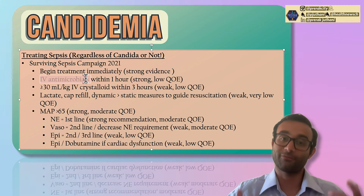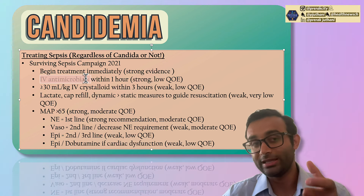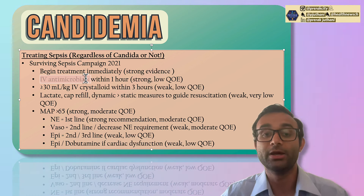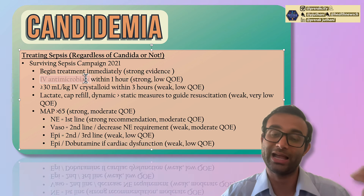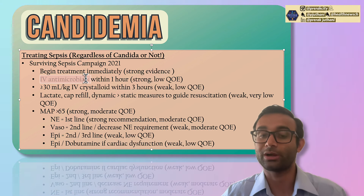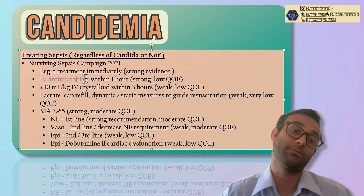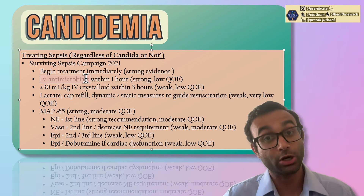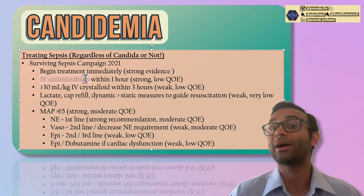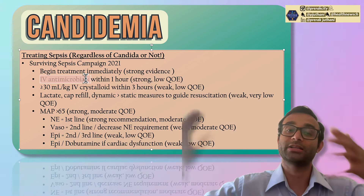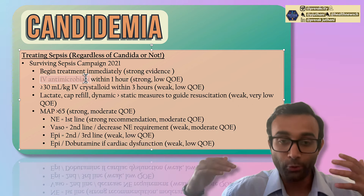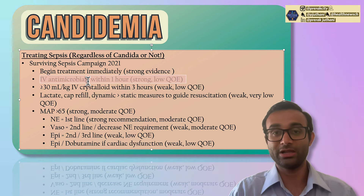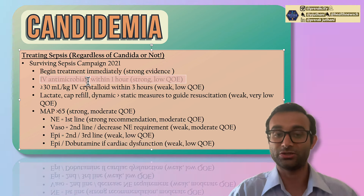For example, if a patient aspirated and you think they have aspiration pneumonia seeding their blood, start IV antibacterials covering aspiration pneumonia organisms. Or if a patient with an indwelling Foley presents with fever, hypotension, and suprapubic pain, start antibiotics for a urinary source presumptively. The key point: anytime you're concerned for sepsis, start IV antimicrobials within one hour. If you don't know what you're covering, start broadly and narrow as you find out more information.